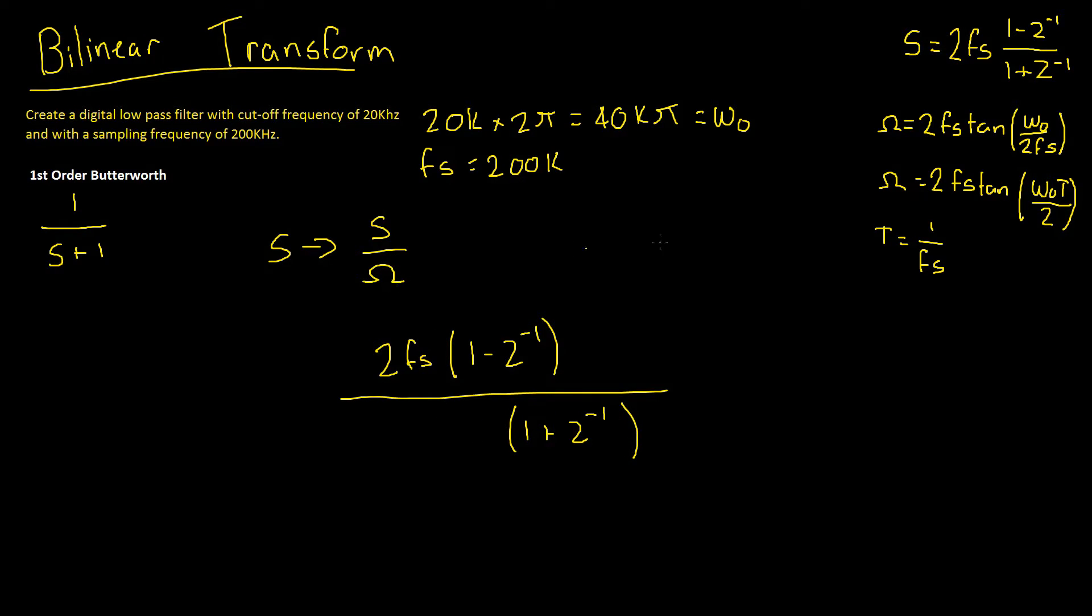And remember, that denominator is multiplied by the omega, which is 2FS tan of omega 0, which is 40k pi, divided by 200k multiplied by 2, which is 400k. Now, we can see that the 2FS cancels nicely, and we're left with 1 minus z to the power of negative 1, divided by tan of this mess here times 1 plus z to the power of negative 1. However, this tan here will simply cancel to a value.